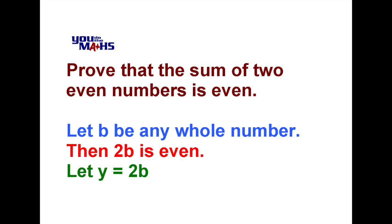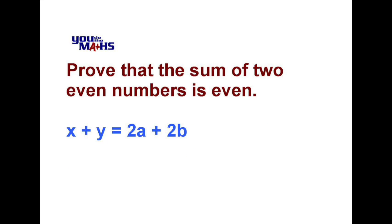Now if we add x and y together we get 2a plus 2b. Remember what we're trying to do is prove that the result is even. So we'll factorize out a 2 from that expression and what we get is 2 multiplied by a plus b. Now we know that a and b are whole numbers, so therefore a plus b in the brackets must also be a whole number.